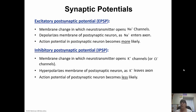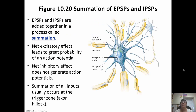EPSPs are excitatory postsynaptic potentials and IPSPs are inhibitory postsynaptic potentials. These concepts have been repeated because they're important — the more you hear them, the easier they'll be to learn. EPSPs and IPSPs can be added together through a process called summation. Depending on which is stronger, they can cancel each other out. A net excitatory effect leads to greater probability of an action potential; a net inhibitory effect leads to action potentials being inhibited. Summation of all inputs occurs at the trigger zone — the axon hillock.